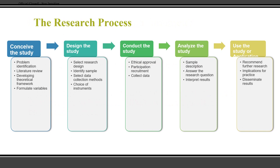The research process has five main stages. First, you need to conceive the study — identify a problem. Then you do a literature review to find out what previous researchers have discovered. Next you design the research, then conduct it, analyze the data, and finally use the study to implement findings in patient care or share it with the research community. We will look at each stage in more detail.